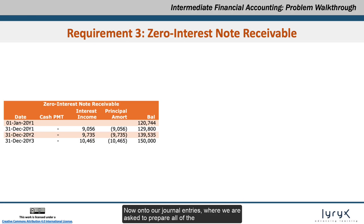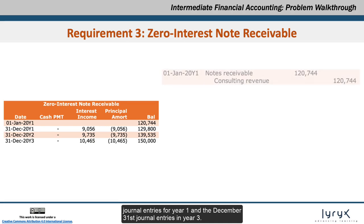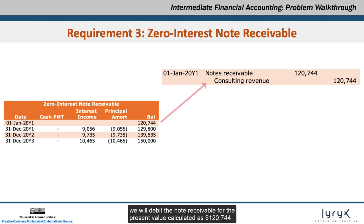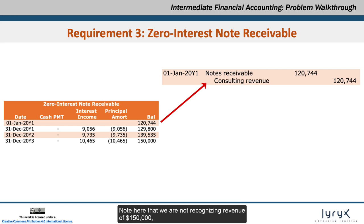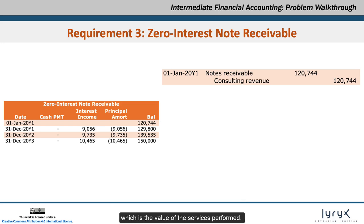Now on to our journal entries, where we are asked to prepare all of the journal entries for Year 1 and the December 31 journal entries in Year 3. Starting with the recognition of the note on January 1, Year 1, we will debit the note receivable for the present value calculated as $120,744 and credit consulting revenue for the same amount. Note that we are not recognizing revenue of $150,000 — the value of the services performed — but rather we recognize revenue to be the present value of the note receivable.